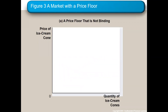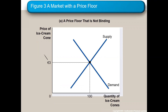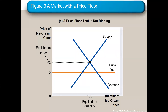Here's a price floor. For the floor to be binding, it has to be above the equilibrium, because the floor is the minimum price. Here the minimum price is two, but if the market is selling at three, the price floor is not helping. Think minimum wage: if the minimum wage is two but everyone's getting three anyway, it's not helping. So this would be non-binding. When it's non-binding — for a floor or a ceiling — you go back to the equilibrium: $3 price and a hundred being sold.